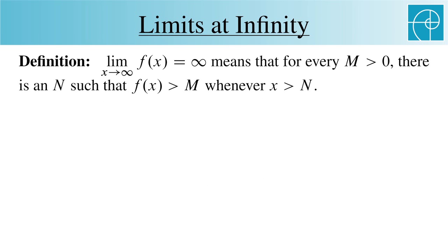The formal definition of a limit at infinity equaling infinity is, I hope, not a surprise. It means that for every m greater than zero, there's an n such that f of x is greater than m whenever x is greater than n.